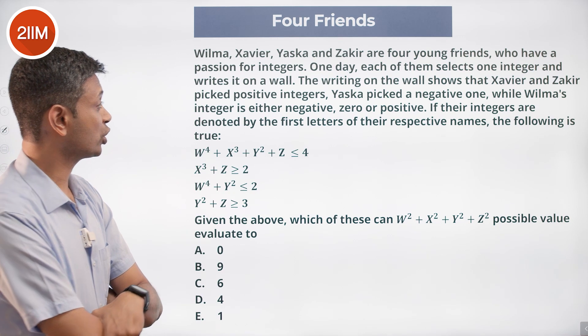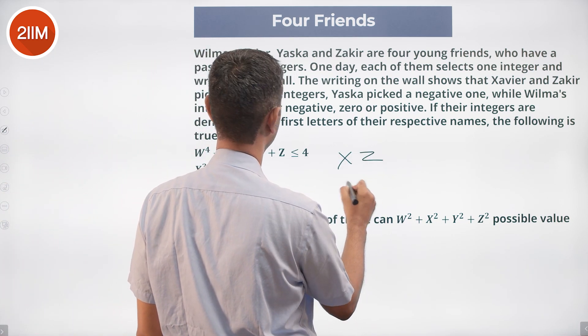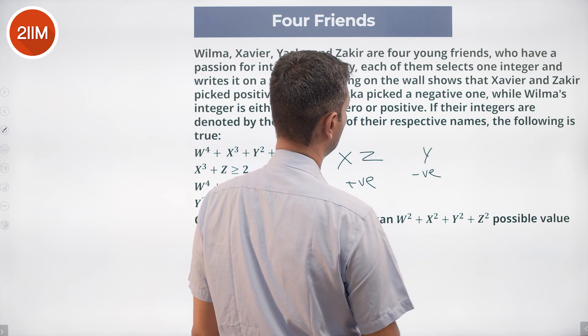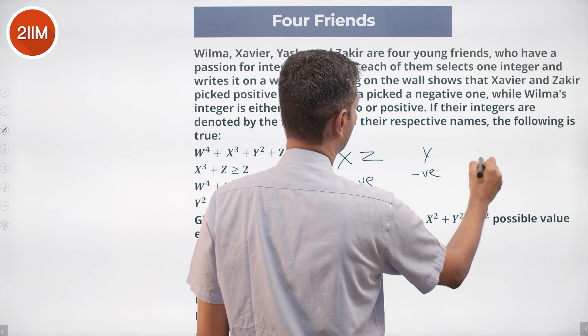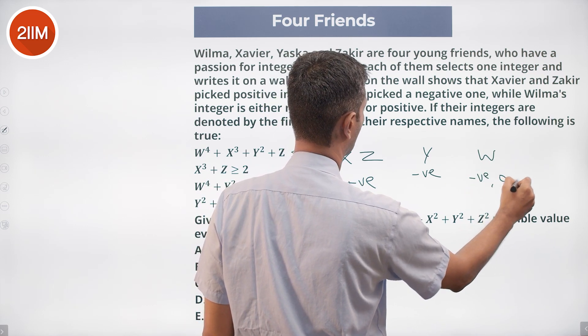The writing on the wall shows that Xavier and Zakir picked positive integers. Yaskar picked a negative one, while Wilma's could be negative, zero, or positive.